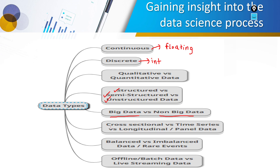We have one more type: cross-sectional, time series, and longitudinal panel data. In time series data, time plays a very important role — only one variable changes with respect to time. In cross-sectional data, it's similar but we have more than one variable. Longitudinal and panel data is a combination of cross-sectional and time series data.